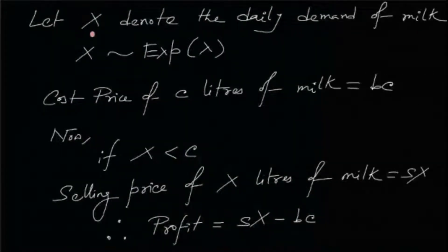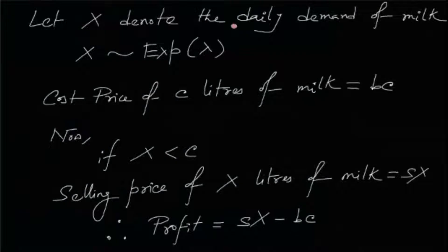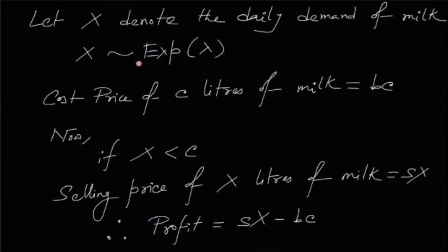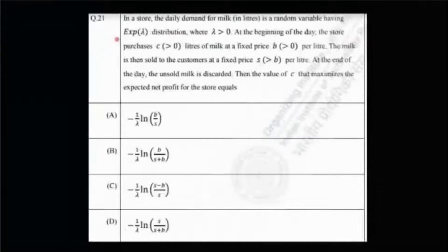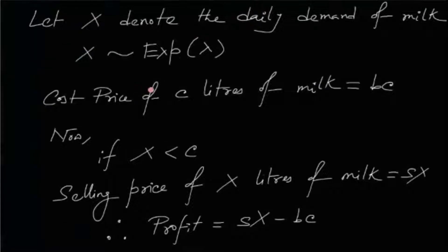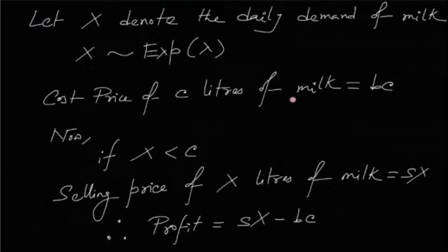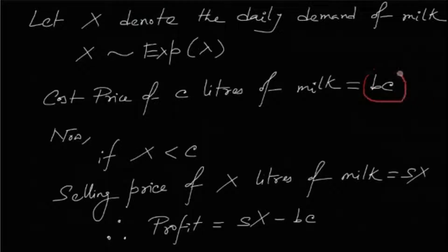We need to find the value of C that maximizes the expected net profit for the store. Let X denote the daily demand of milk. X follows exponential lambda distribution. The cost price of C liters of milk at price B per liter is BC — that is the total cost price at which the store buys the milk.